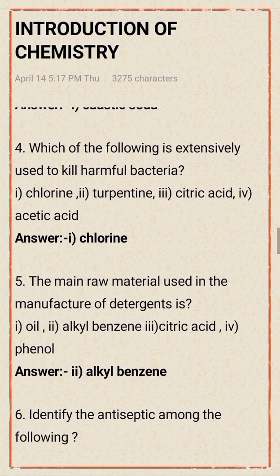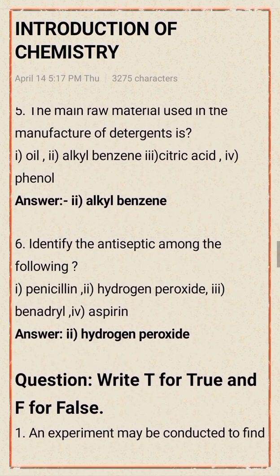Next question: the main raw material used in the manufacture of detergent is — option one: oil; option two: alkyl benzene; option three: citric acid; option four: phenol. The right answer is option two, alkyl benzene.